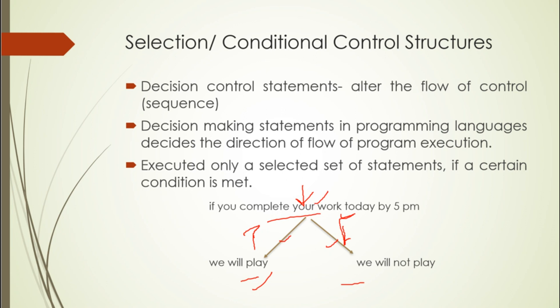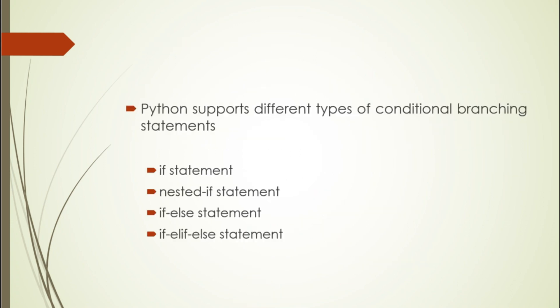Decision control statements alter the flow of control — we can change the flow of control. We can choose whether a condition is true or false. Decision-making statements in programming languages decide the direction of flow of program execution. Only a selected set of statements is executed if a certain condition is met. If our condition is true, then we will execute the selected set of statements. This is the case of selection or conditional control statements.